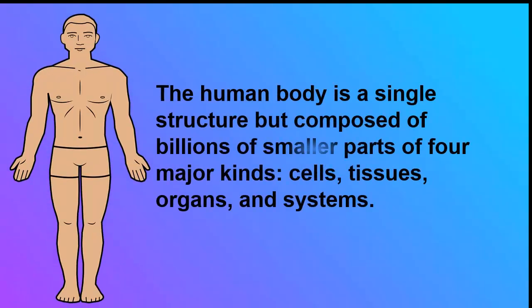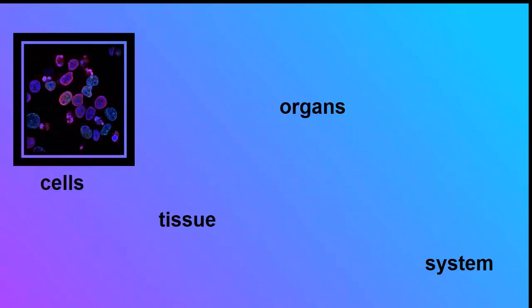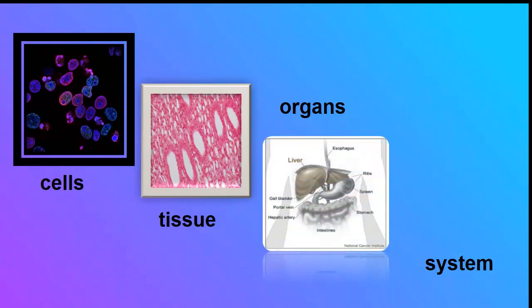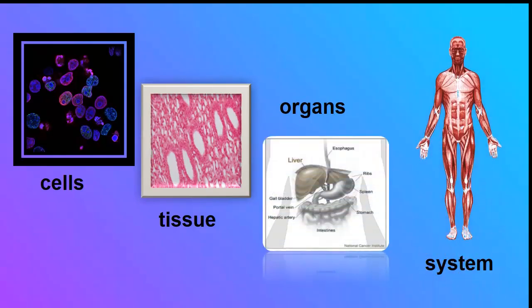The human body is a single structure but composed of billions of smaller parts of four major kinds: the cells, the tissue, the organs, and the system.